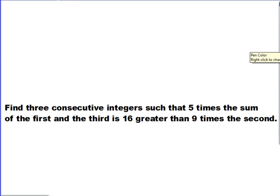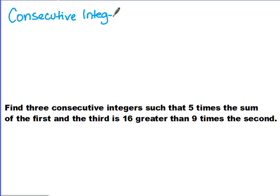The next thing we're going to talk about is consecutive integer word problems. Consecutive integers are numbers that come one right after the other. We're also going to work with consecutive even and consecutive odd integers. If we're talking about odd numbers: one to three is two units apart, three to five is two units apart — so consecutive odd integers are two units apart. Looking at evens: two to four is two units apart, four to six is two units apart — so consecutive even integers are also two units apart.